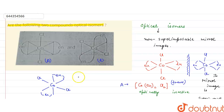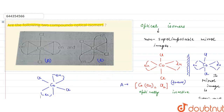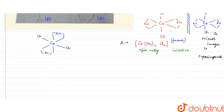Compound A is not the mirror image of compound B — we can see that if we place a mirror here, this is not the mirror image of compound A. So compounds A and B are not even mirror images of each other, and therefore they cannot be optical isomers.